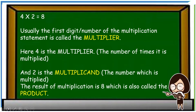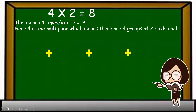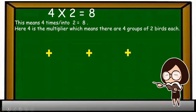The result of multiplication is eight, which is also called the product. Four into two is equal to eight also means there are four groups of two. Let us take an example of birds.